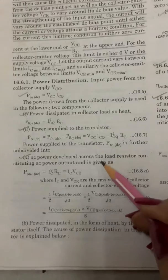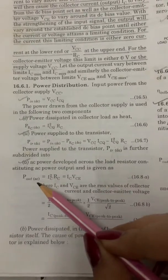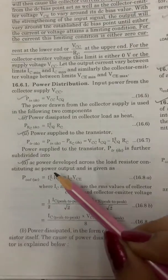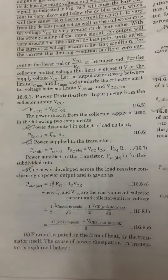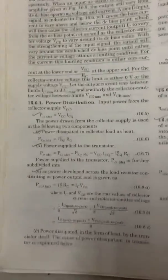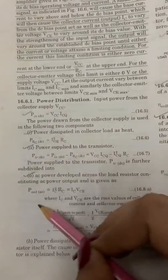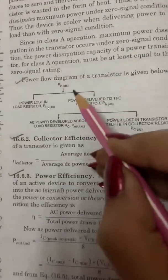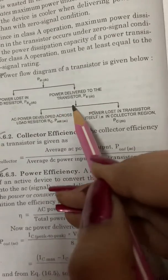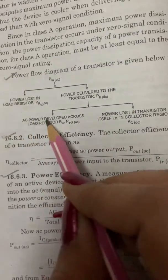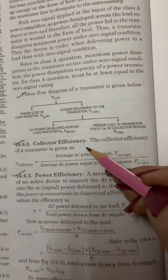Next, AC power developed across the load resistance, constituting AC power output, that is P_out(AC) = IC² × RC = IC × VCE. Power dissipation is also done in the form of heat by the transistor itself. These are the four formulas for power distribution: P_in(DC), P_R(DC), P_TR(DC), and P_out(AC). The power flow diagram shows P_in(DC) categorized into power lost in load resistance P_RC(DC) and power delivered to the transistor P_TR(DC), which further splits into AC power developed across RC and power lost in the transistor collector region.